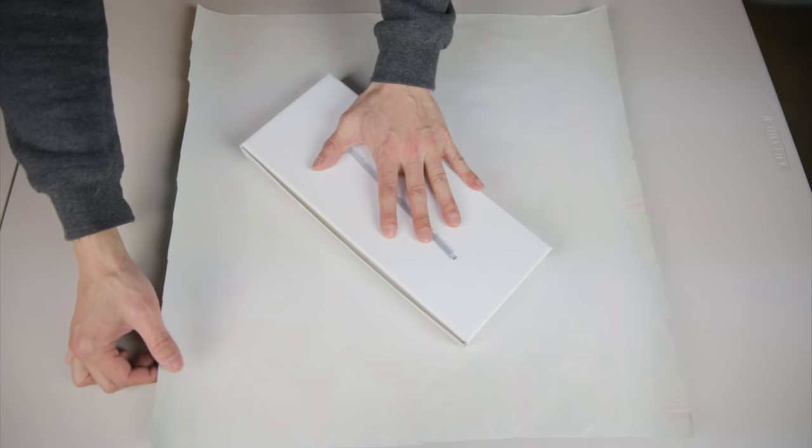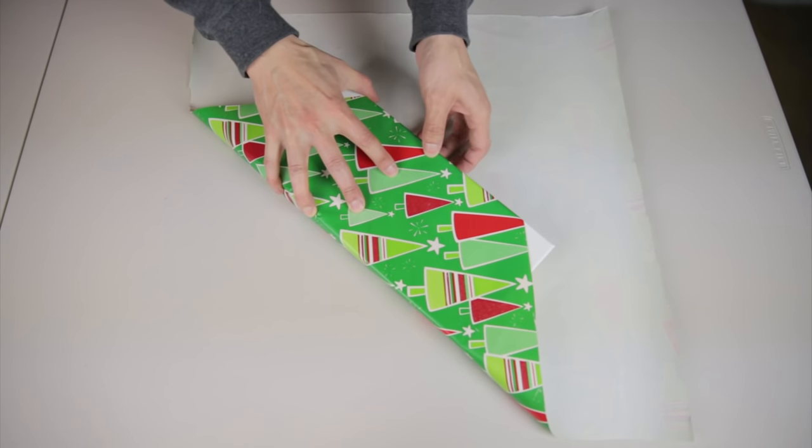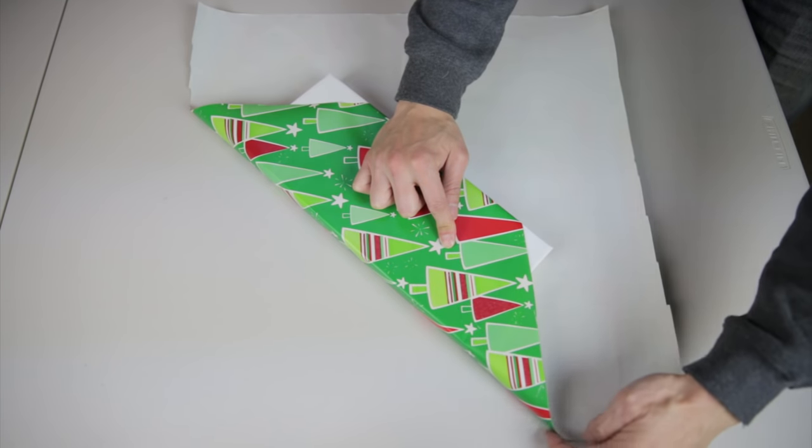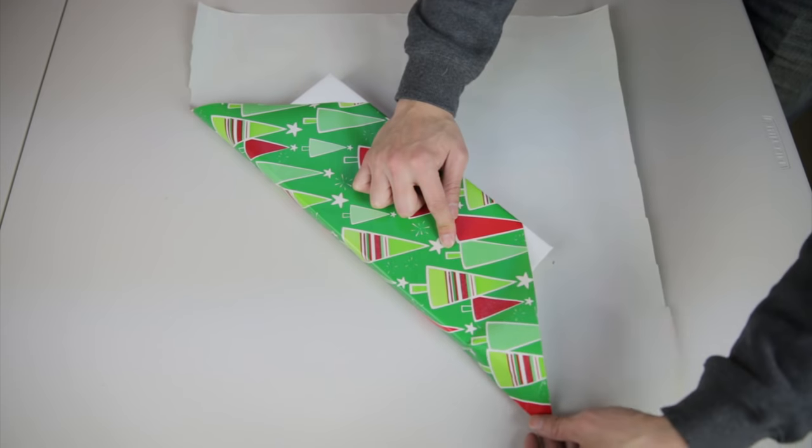Now without moving the present, take this corner of the paper and wrap it over the present like this. Tuck it under if you need to. Now on the bottom edge of this corner, use your finger and trace a line along the edge, and simply guide it in.